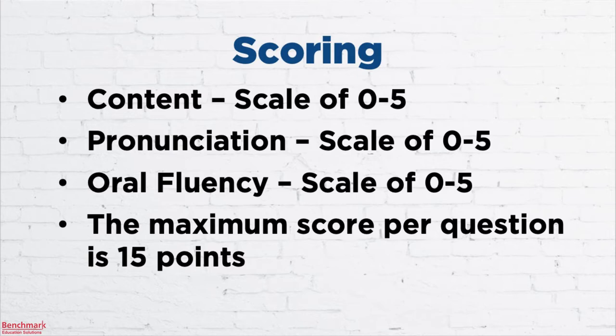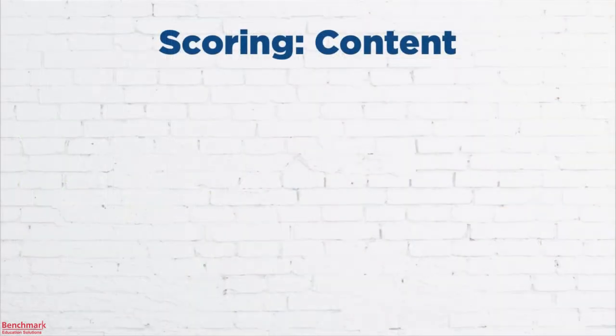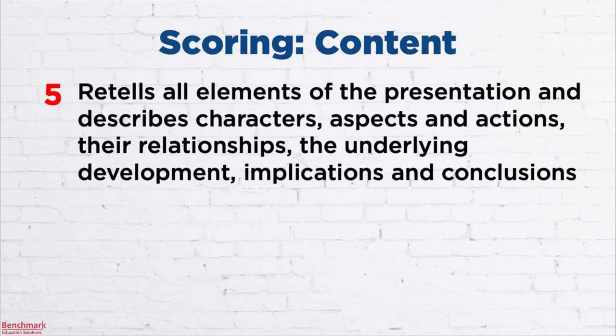Let's look at each of these areas in a little more depth, starting with content. The maximum score of 5 basically means that you have described all elements of the presentation, including the characters, aspects and actions, relationships, underlying development, implications, and conclusions. A score of 4 is not all that different — you're describing the key points of the presentation and their relations, referring to implications or conclusions.